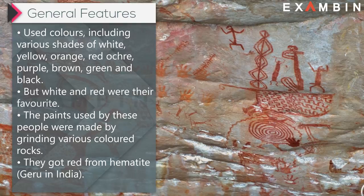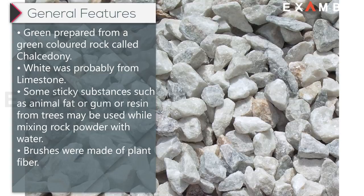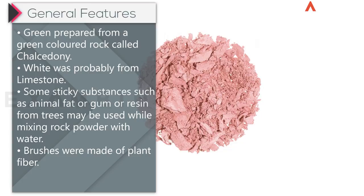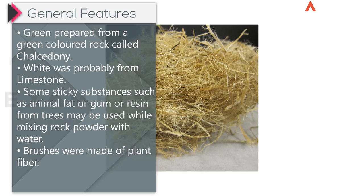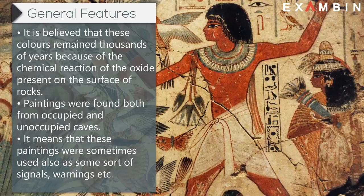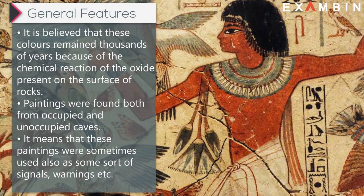The paints used by these people were made by grinding various colored rocks. They got red from hematite (Geru in India), green was prepared from a green colored rock called Chalcedony, and white was probably from limestone. Some sticky substances such as animal fat, gum, or resin from trees may have been used while mixing rock powder with water. Brushes were made of plant fiber. It is believed these colors remained for thousands of years because of the chemical reaction of the oxide present on the surface of rocks.